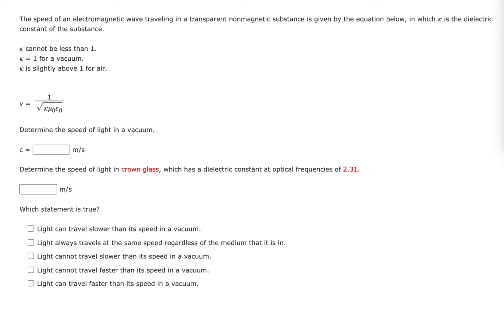Like for example in this problem, they're going to ask us about crown glass, and it has a kappa of 2.31. So that's going to substantially slow down the speed of light when light travels through that medium.